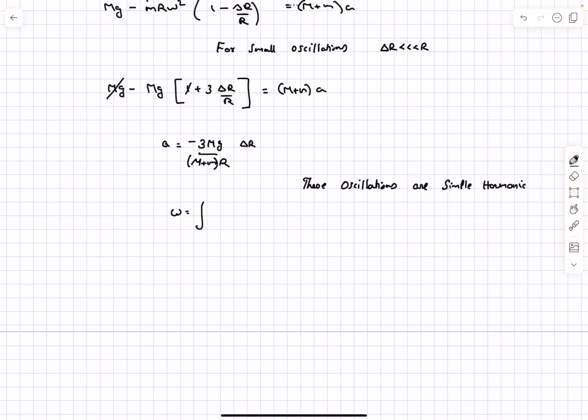The angular frequency is going to be square root of 3mg divided by capital M plus small m times R. Now in the answer key they have given it in terms of the omega, and for that we'll use the equilibrium condition again. So this is going to be 3. Now Mg is m omega squared R, so this would be 3m omega squared divided by capital M plus small m. So this was the required answer for the problem.